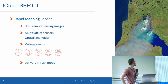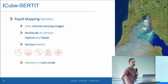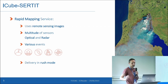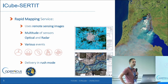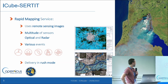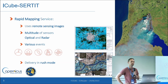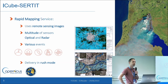In the Rapid Mapping Service, we are using remote sensing images that are mostly tasked for us. We use a multitude of sensors, both optical and radar, to extract various events such as volcanoes, floods, landslides, fire, earthquakes, and so on — delivering them in rush mode. All this is within the Copernicus Emergency Management framework, which is the base of a lot of machine learning and deep learning datasets for validation layers. We are also part of the International Charter.